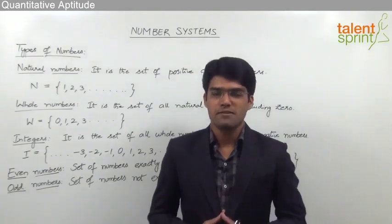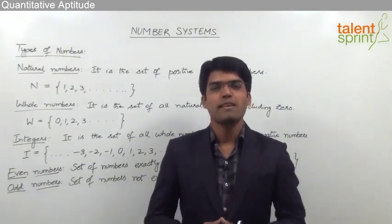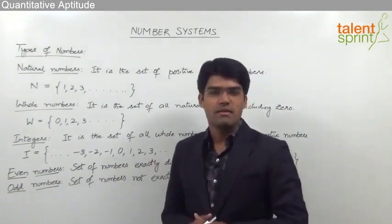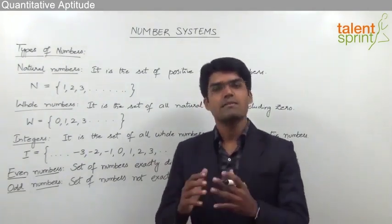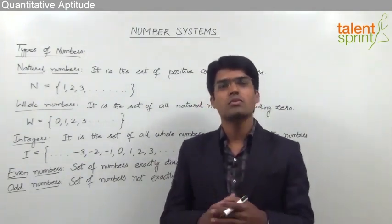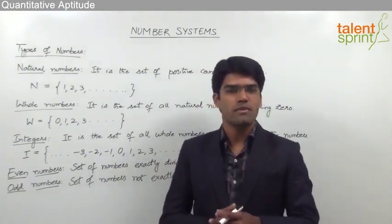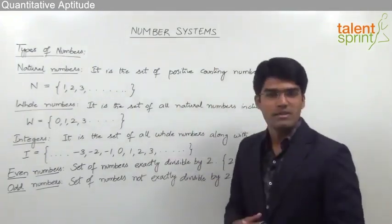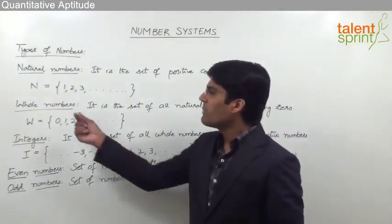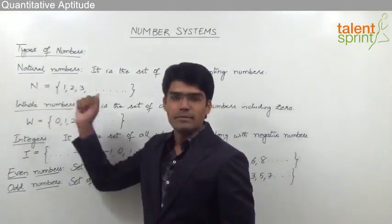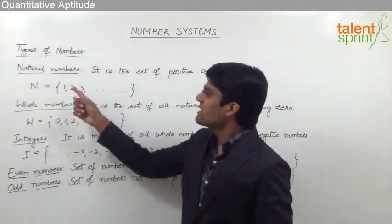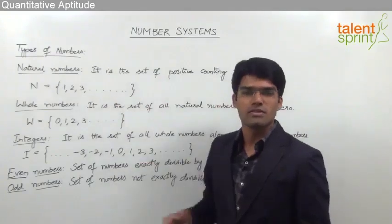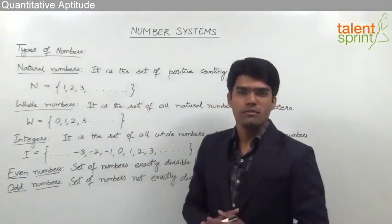Let us now look at the classification of numbers into various types. The first one is natural numbers. Natural numbers are those numbers which are used for the purpose of counting. It is a set of positive counting numbers, denoted by the letter N. As you can see, natural numbers include 1, 2, 3, 4, 5 and so on up to infinity.